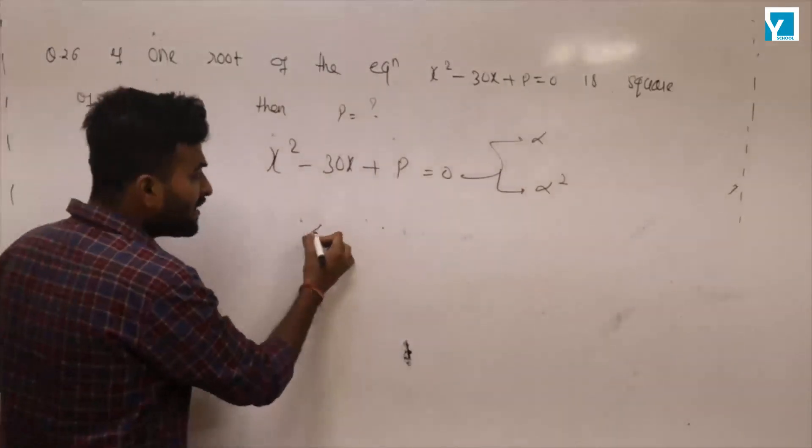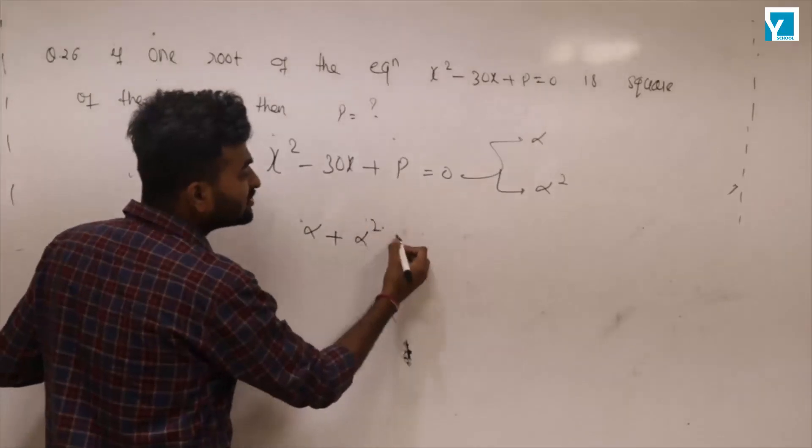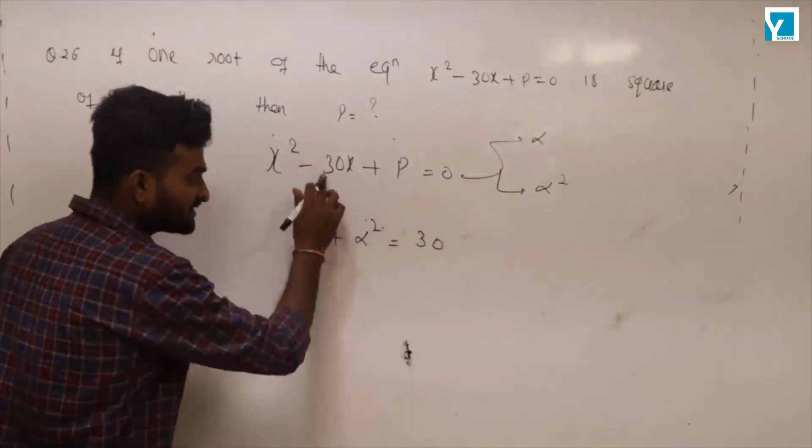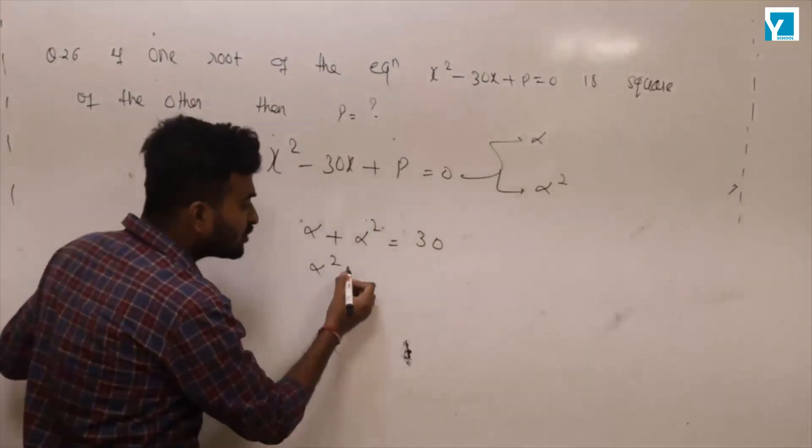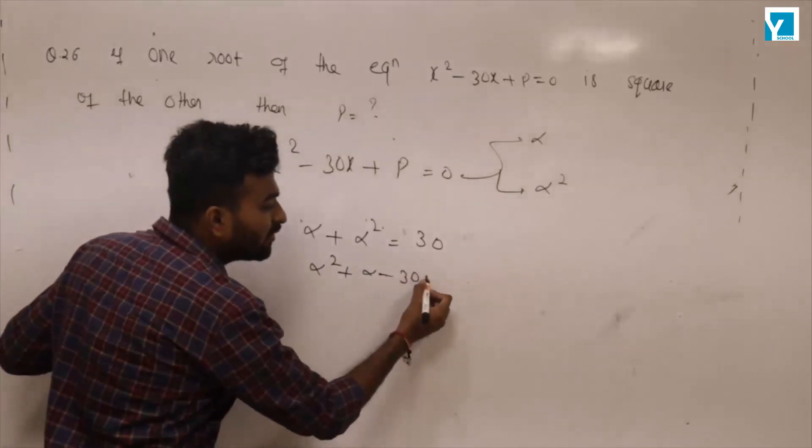And we know that alpha plus alpha squared equal to 30, the sum of roots. So alpha squared plus alpha minus 30 equal to 0.